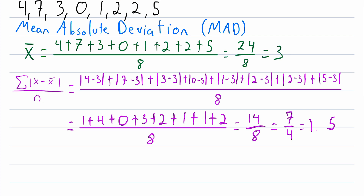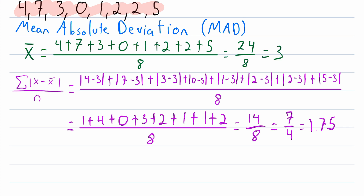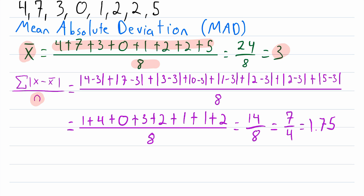So that's the mean absolute deviation: 1.75, or 7/4. It's a measure of how much, on average, the values in a data set deviate from the mean. We calculate it by first finding the mean of the data set, then adding up the distance between each data point and the mean — finding distance by taking the absolute value of the difference. Since we want the average of those distances, we divide by n, the total number of data points, and then it's straightforward computation all the way to the answer.